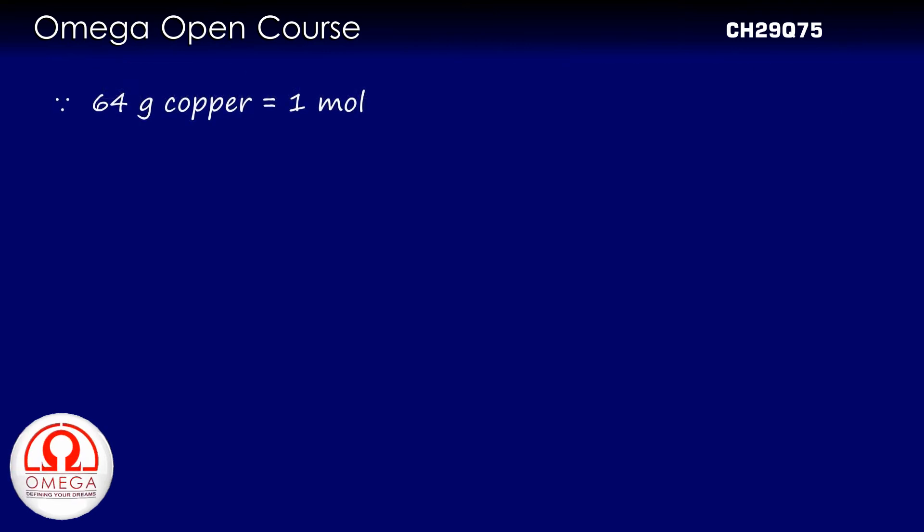Since the molar mass of copper is 64 g, the number of moles of copper atoms in 6.4 g of copper is 0.1 mol.